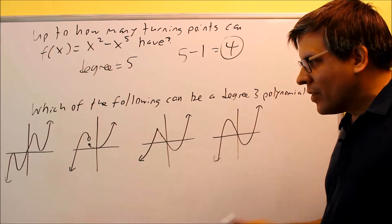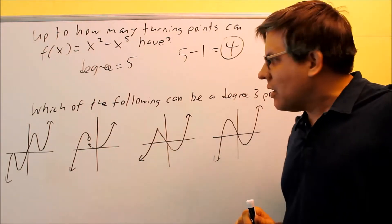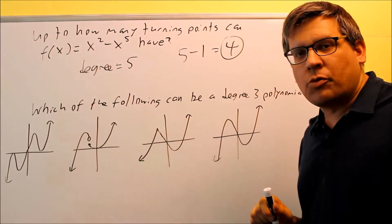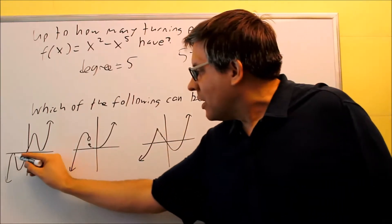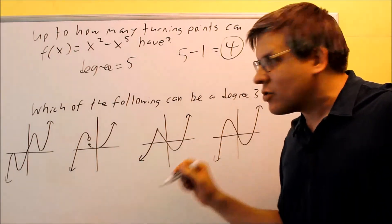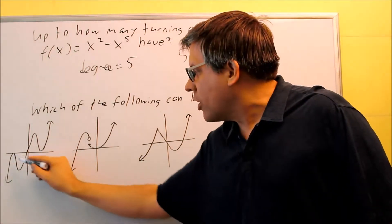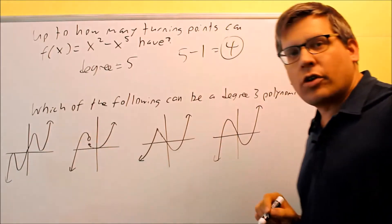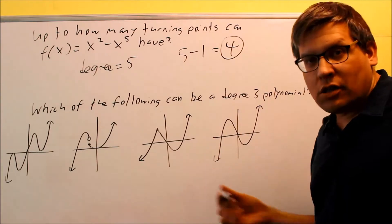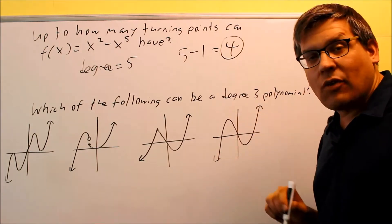So this one is not going to be the right one. This can't be a degree 3 polynomial. The reason why is because the turning point is where the graph actually changes directions or something happens to the graph itself. We have 1, 2, 3, we have 4 different turning points there. So that can't be a degree 3. It's got too many turning points. The most it can have is going to be 2.